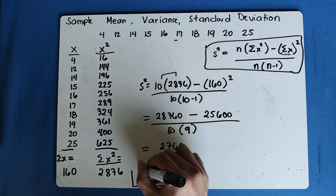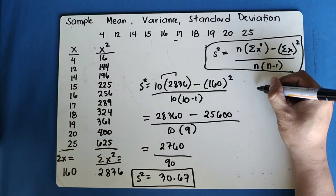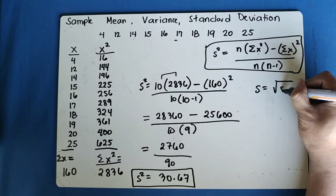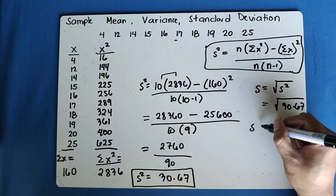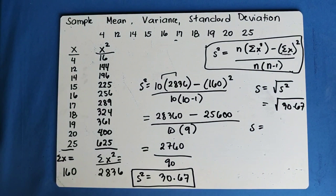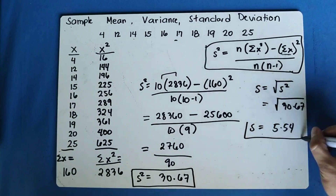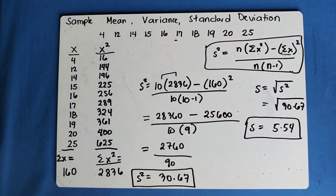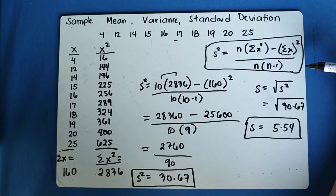Now let's get the standard deviation. The formula is just the square root of the variance. Our variance is 30.67, so the square root of 30.67 gives a sample standard deviation of 5.54. Notice the results are exactly the same — both formulas give the same answer. So depending on which formula you use, you get the same result for sample variance and standard deviation.